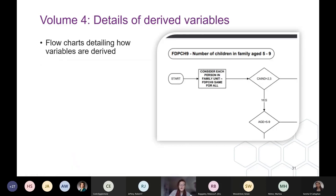In volume four, you can find the details of the derived variables. For each one, you'll find a flow chart showing how the variable has been derived — this is really useful if you want to know who a particular variable applies to or captures, or just the formulation behind the variable.